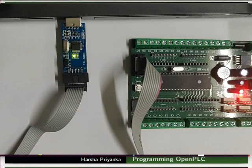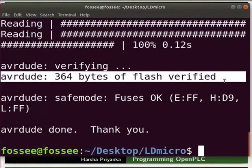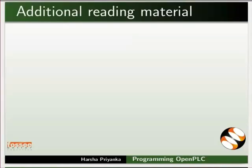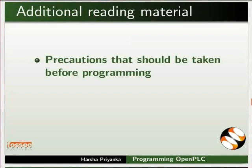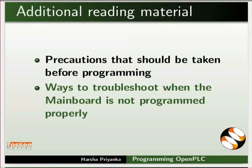We can see another LED on the USB ASP is blinking. This indicates that it is communicating with the mainboard appropriately. In the terminal, we get avrdude: 364 bytes of flash verified. Note that the number of bytes varies from program to program. If you don't get either of these indications, it means that programming wasn't done properly. Refer to the additional reading material of this tutorial to know more about precautions and ways to troubleshoot when the mainboard is not programmed properly.